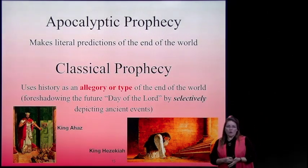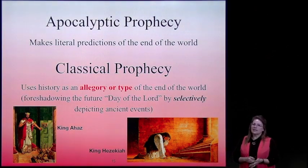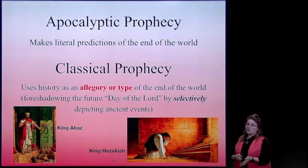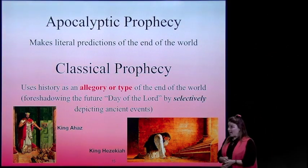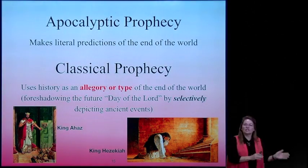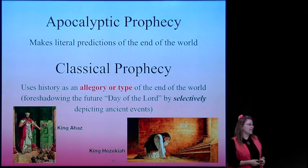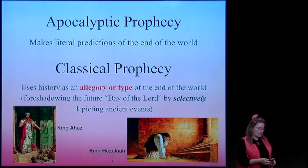Apocalyptic prophecy makes literal predictions of the end of the world. Classical prophecy uses history as an allegory or type of the end of the world, but foreshadows the end by selectively depicting the ancient events.